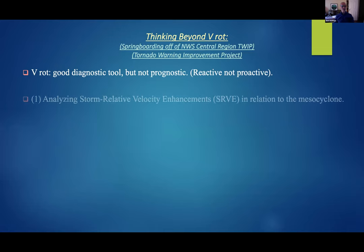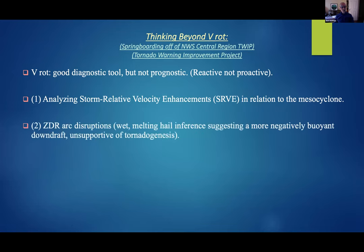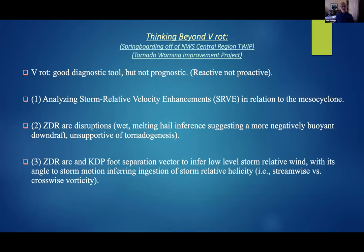The first option is the storm-relative velocity enhancement in relation to the mesocyclone. Somewhat related is analyzing ZDR arc disruptions, indicating the presence of wet melting hail that might suggest a sufficiently cold downdraft unsupportive of tornado genesis. Finally, we'll tie the ZDR arc with the KDP foot, looking at a separation vector between these two parameters to potentially infer low-level storm-relative helicity — essentially streamwise versus crosswise vorticity — which might lead to tornado genesis.